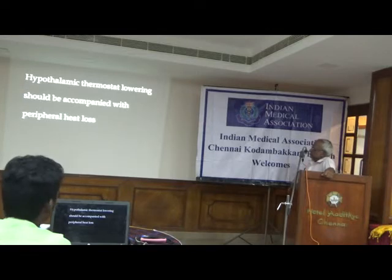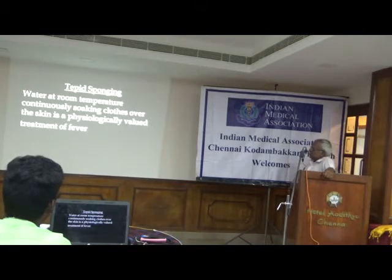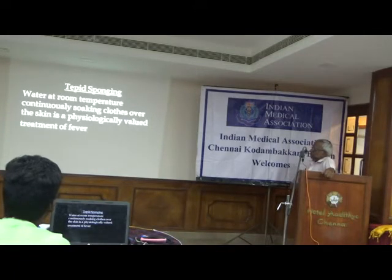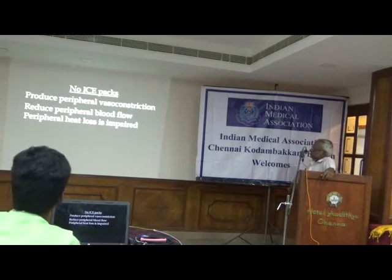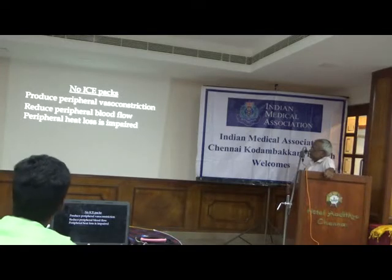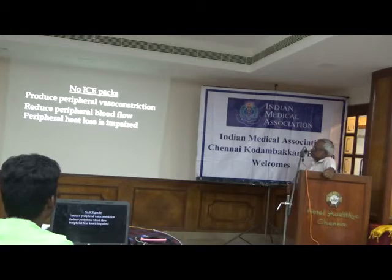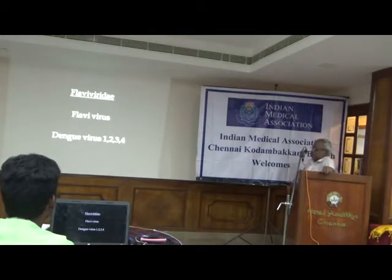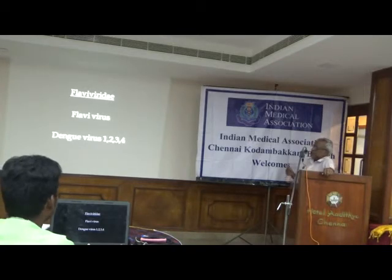Hypothalamic thermostat lowering should be accompanied with peripheral heat loss. Sponging with water at room temperature and continuously soaking clothes over the skin is a physically valuable treatment of fever. No ice packs — ice packs produce peripheral vasoconstriction, reduce peripheral blood flow, and hence impair peripheral heat loss. Now we come to dengue. The primary treatment of dengue is treatment of fever, and hence this elaboration on what we should do to treat fever.